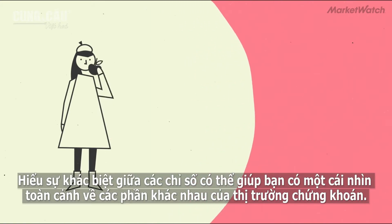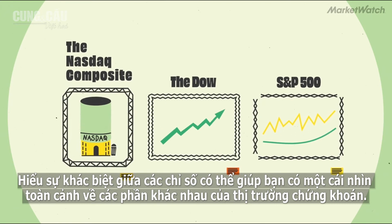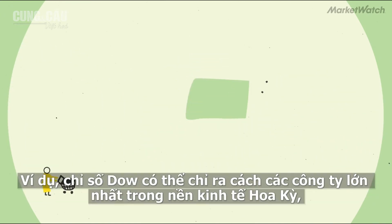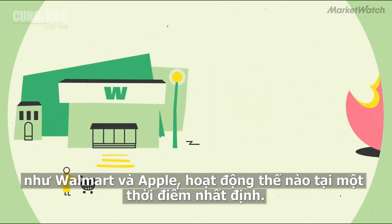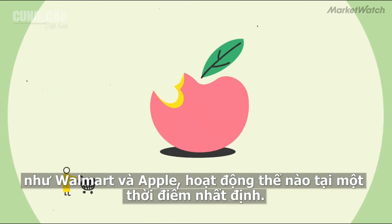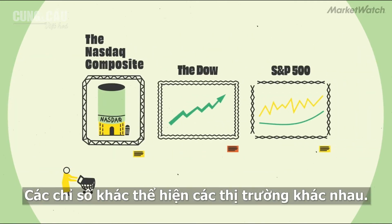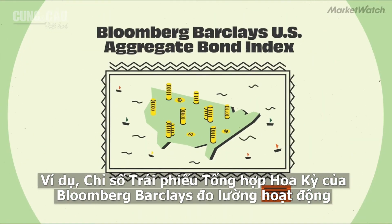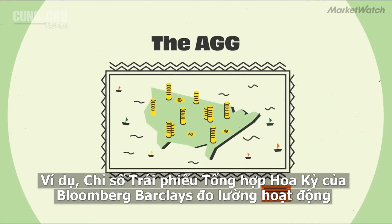Understanding the differences between indexes can help you get a snapshot of different parts of the stock market. For example, the Dow can show how the largest companies in the US economy, like Walmart and Apple, are doing at a given moment. Other indexes can shed light on different markets.